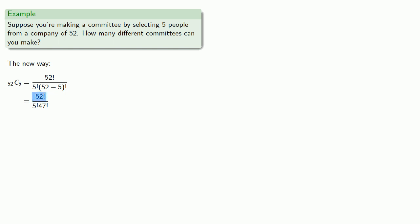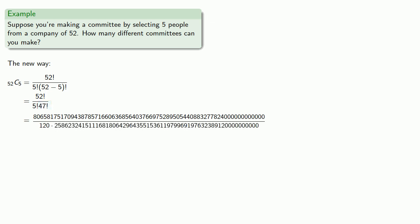And this 52 factorial, that's the product of the numbers from 1 through 52. That's quite a big number. 5 factorial, that's the product of the numbers from 1 through 5. That's not too bad. And then 47 factorial will be... And when we simplify this horrifying mess, we get our answer.